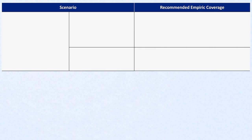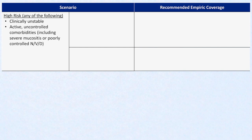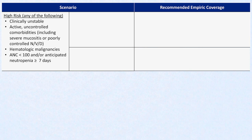Now comes the question of choosing empiric antibiotic coverage, which requires categorizing the patient as high or low risk of clinical deterioration. The prediction rules are just one part. A patient is typically considered high risk if any of the following are present: they are already clinically unstable; they have active uncontrolled comorbidities including severe mucositis or refractory GI symptoms; they have a hematologic malignancy; they have profound neutropenia with an ANC less than 100 or anticipated duration of neutropenia longer than a week; or they have a low MASCC score or high CISNE score. If high risk, next ask if shock or severe sepsis is present, defined by at least one acute organ failure.